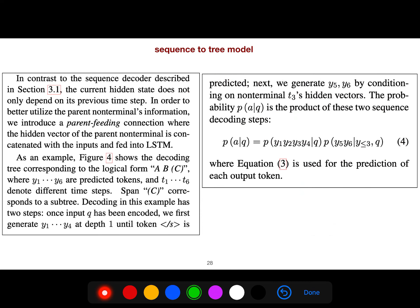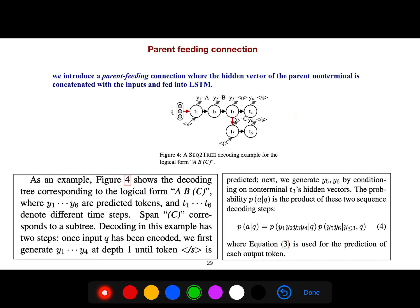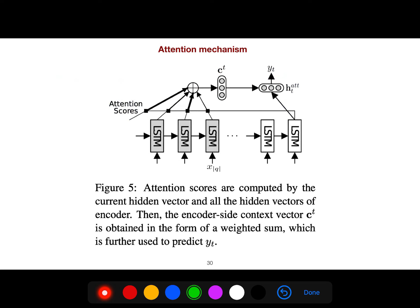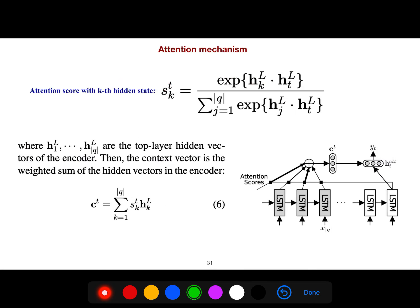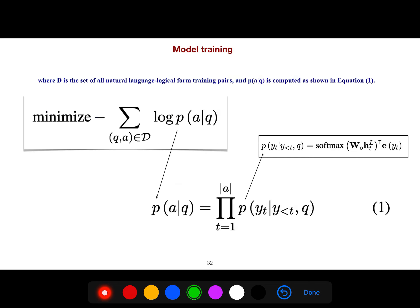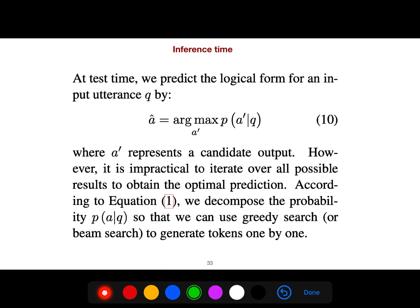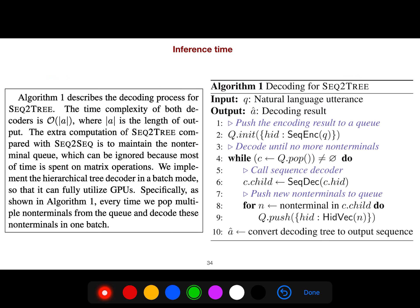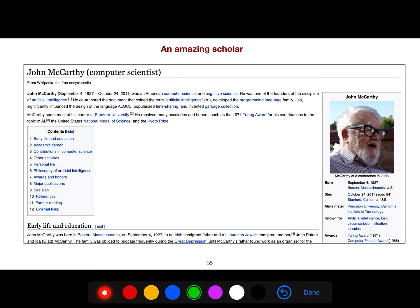Sequence-to-tree model: we have parent feeding connection, and we just use the standard attention mechanism. Standard attention mechanism is obvious, everything is obvious. Then we do model training, standard as well. We're just maximizing the likelihood. Inference is also very normal, standard inference time. This is the sequence-to-tree. And this is amazing scholar John McCarthy, as I said.